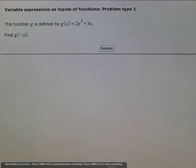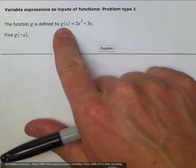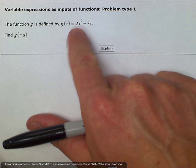Here we're asked to use variable expressions as the inputs to functions. So we have the function g defined by g of x equals 2x squared plus 3x.